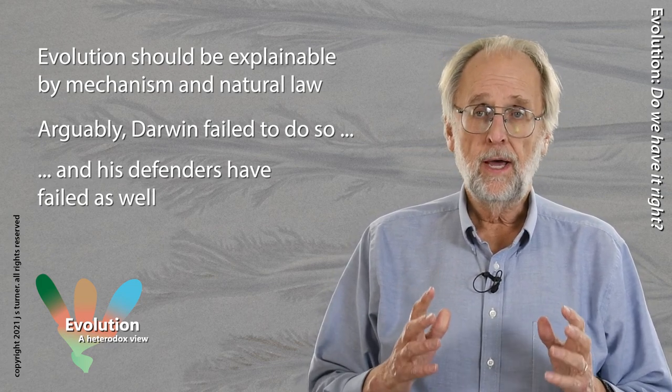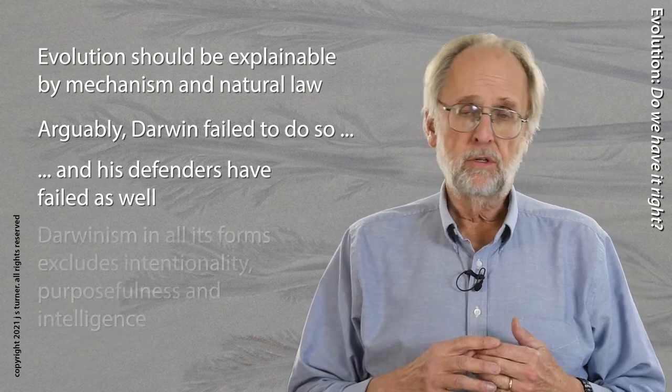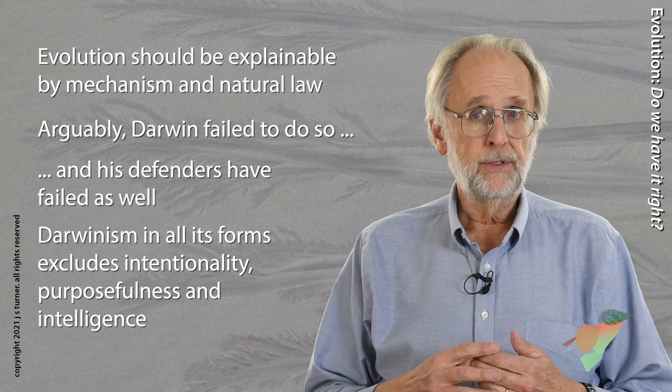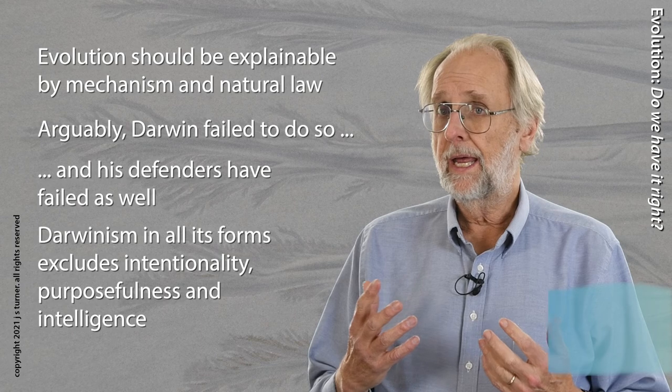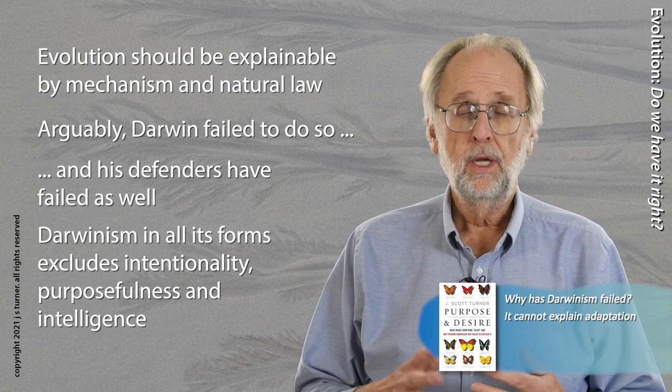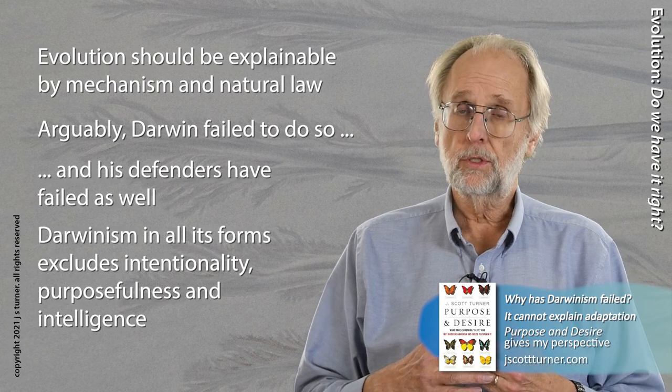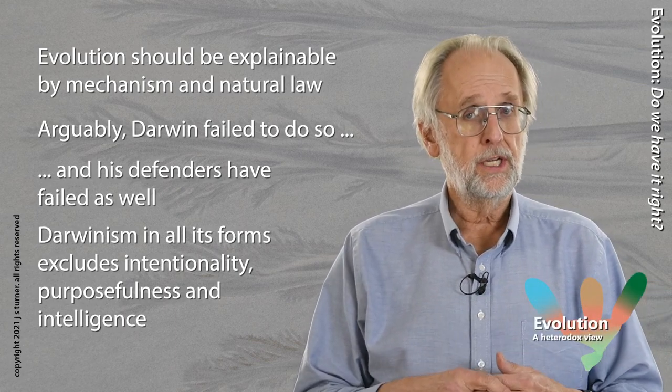And the root problem was this: Life is not just mechanism. The essential attributes of life include purposefulness, intentionality, and intelligence. And no theory about anything involving life, including its history, evolution, can exclude those attributes. Yet that's precisely what the Darwinian idea seeks to do.